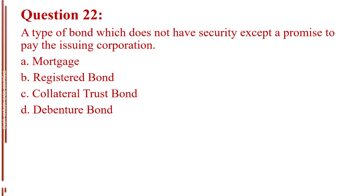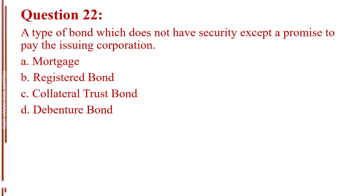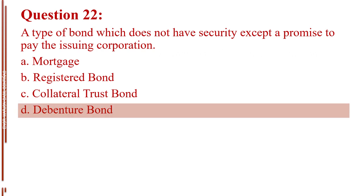Question number 22. A type of bond which does not have security except a promise to pay the issuing corporation. Letter A, mortgage. Letter B, registered bond. Letter C, collateral trust bond. Letter D, debenture bond. The answer is Letter D, debenture bond.